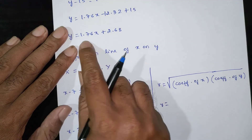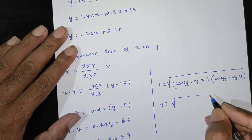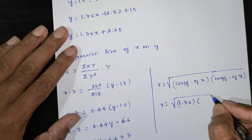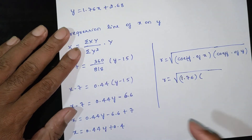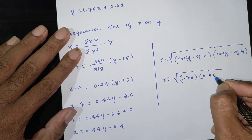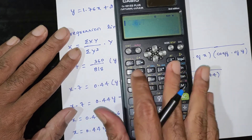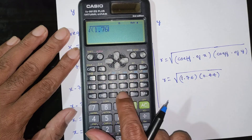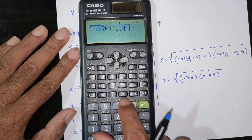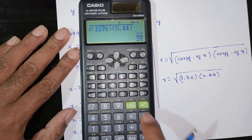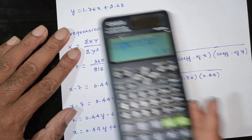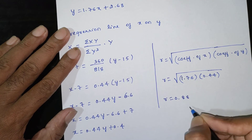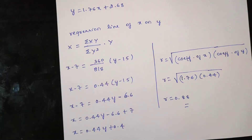The coefficient of x in the regression line of y on x is b_yx = 1.76, and the coefficient of y in the regression line of x on y is b_xy = 0.44. Therefore r = √(b_yx × b_xy) = √(1.76 × 0.44) = √0.7744 = 0.88. This is the required answer.